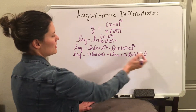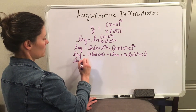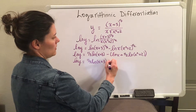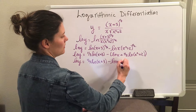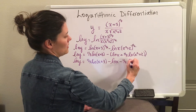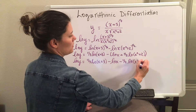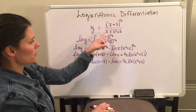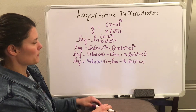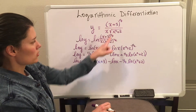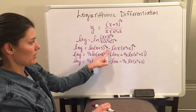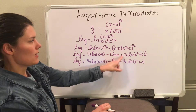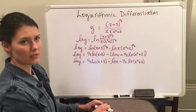So when this is all said and done, I have the natural log of y equals one-third natural log of x plus 3, minus natural log of x, minus one-half natural log of x squared plus 2, because I brought the negative through the parentheses. To summarize: if it's a quotient, separate with a minus sign; if it's a product, separate with a plus sign; and any powers can be brought down to the front.